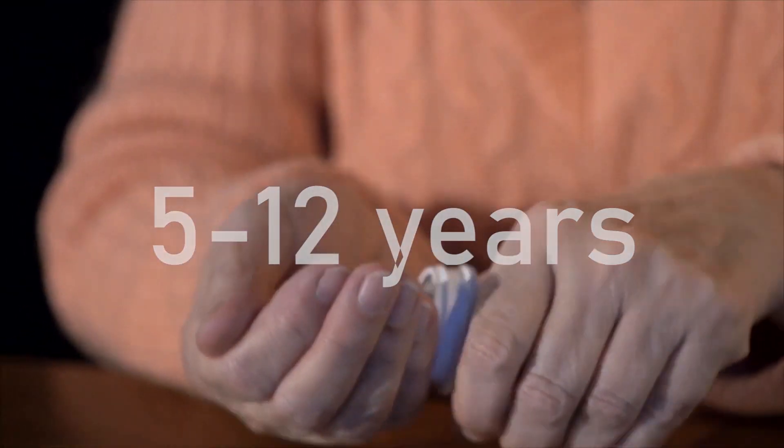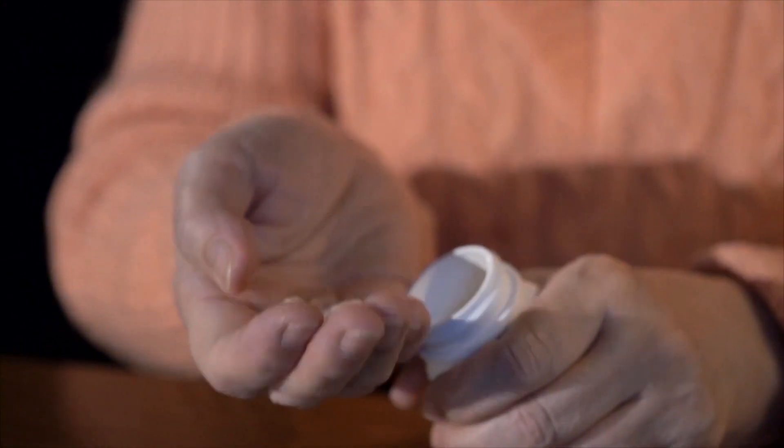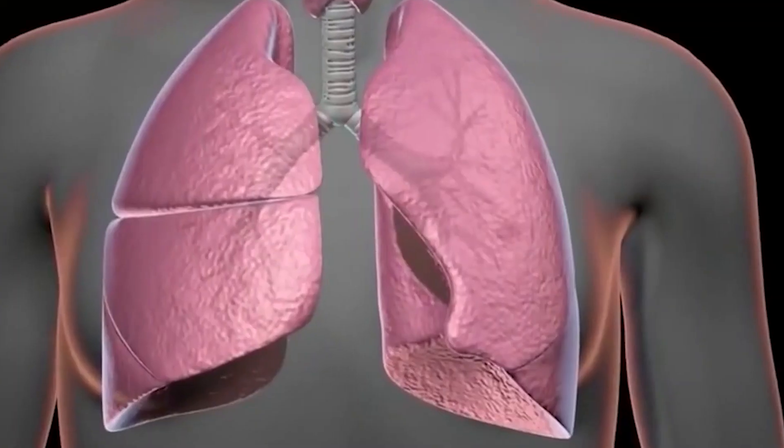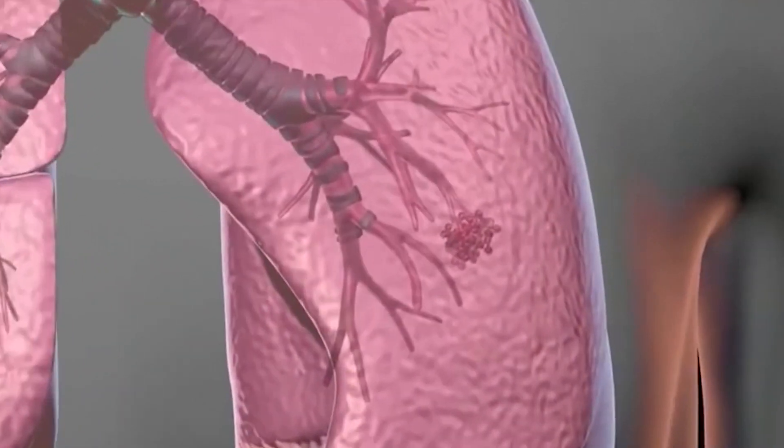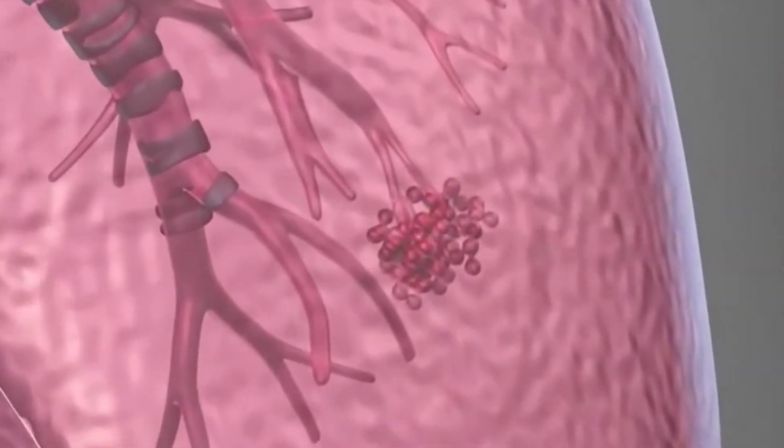Scientists involved in the trials believe that this type of senolytic treatment could be readily available in five to twelve years, meaning people who are middle-aged may be able to access life-prolonging senolytic medication in their lifetime. If you got given an extra ten years to live, what would you do with it? Leave a comment down below and we'll pin the best answer.